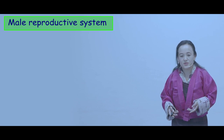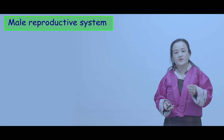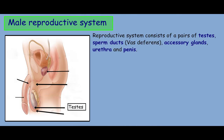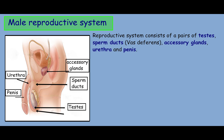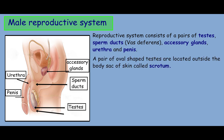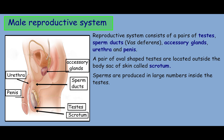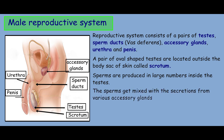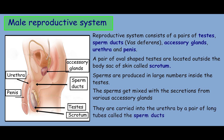Let us look at how the male reproductive system functions. It consists of a pair of testes, sperm duct, accessory glands, urethra, and penis. A pair of oval-shaped testes are located outside the body in a sac of skin called the scrotum. Sperms are produced in large numbers inside the testes and get mixed with secretions from various accessory glands. They are then carried into the urethra by a pair of long tubes called the sperm ducts.